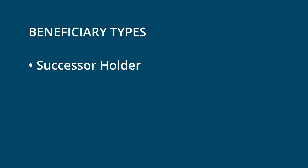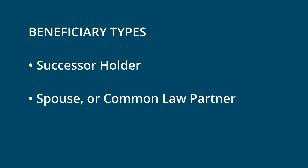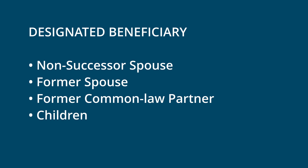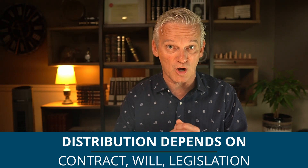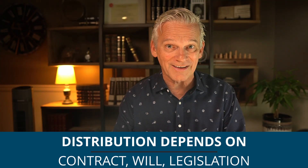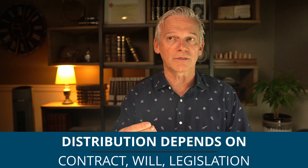There are two types of beneficiaries. There's what's called the successor holder — a special designation limited to a spouse or common law partner. The other more generic type is simply called the beneficiary, which could be a former spouse or common law partner, your children, or qualified donors such as charities. The way money is distributed after death is determined by the TFSA contract itself or a will. In certain jurisdictions — for example in Quebec — there are restrictions around naming a beneficiary inside of a TFSA, so you need to be aware of the rules in your region.